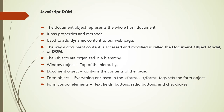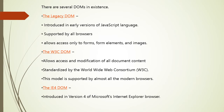Consider the window object, which is at the top of the hierarchy — the outermost element in the object hierarchy. Each HTML document loaded into a window becomes a document object containing the contents of that page. Everything enclosed in form tags sets the form object. The form object contains all the elements defined for that form, such as text fields, buttons, radio buttons, and checkboxes. There are several DOMs in existence, each described in detail regarding how to access and modify document content.